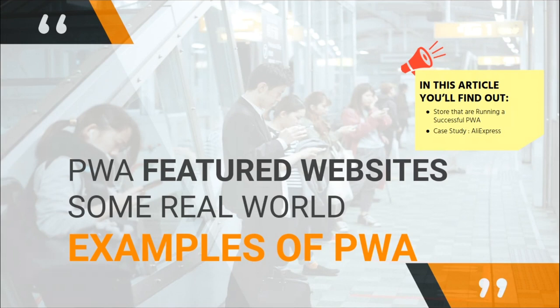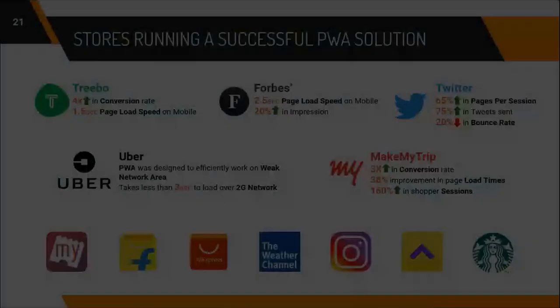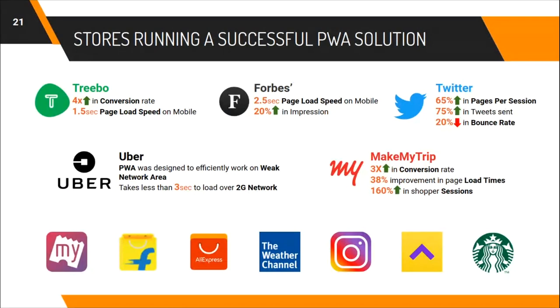Now let's look at some real-world examples of PWA. If someone is considering PWA, they should know where it's already implemented and whether it's helping increase conversion rates or reduce page load speed. OYO Hotels, an Indian budget hotel chain operating on franchising, adopted PWA and within a few months saw a phenomenal growth — their conversion rate increased by four times and page load speed reached 1.5 seconds on mobile.